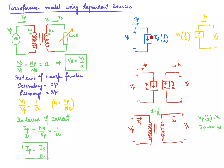We can represent the primary current with a dependent current source, since the primary winding current depends on the secondary winding current. The direction is downward because the dot convention is applied here — the current entering through the dot. As the secondary current increases, the primary current increases, so we model it with a dependent current source.